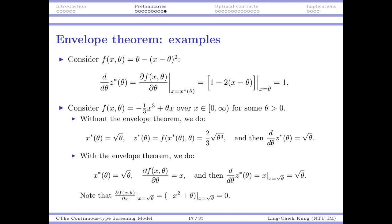You can convince yourself that the optimal x* satisfies the first-order condition, so when you plug it in, the relevant term will be zero — that's always true according to the proof. Those are the three mathematical tools — hazard rates, integration by parts, and the envelope theorem — that you'll use in the later derivations. When they appear, I'll remind you again.